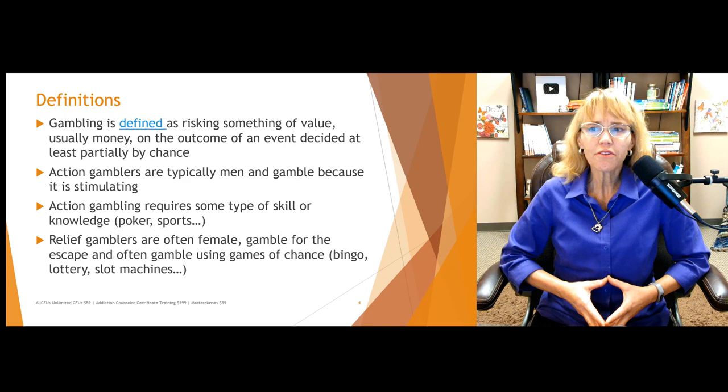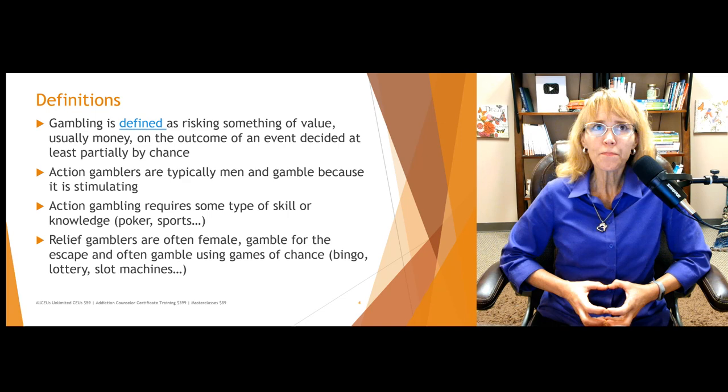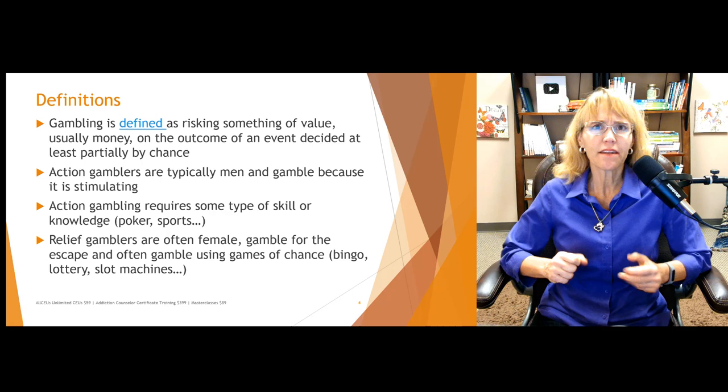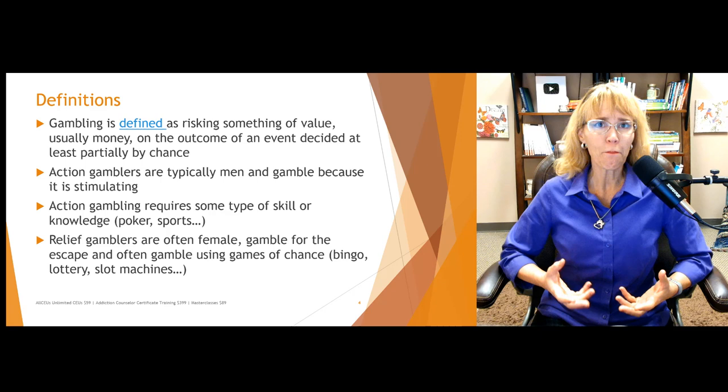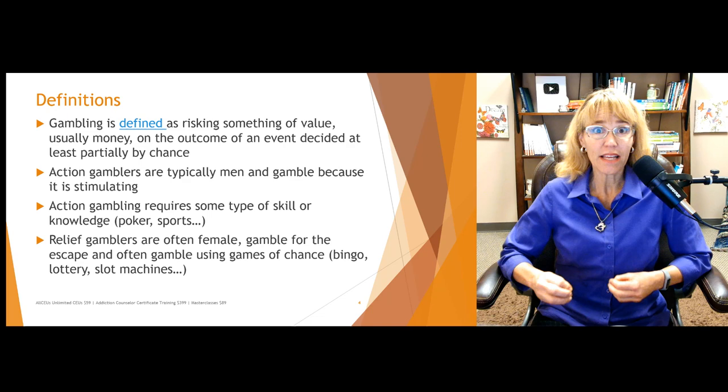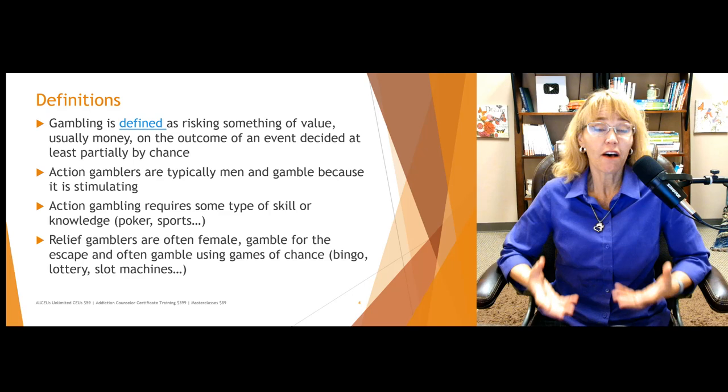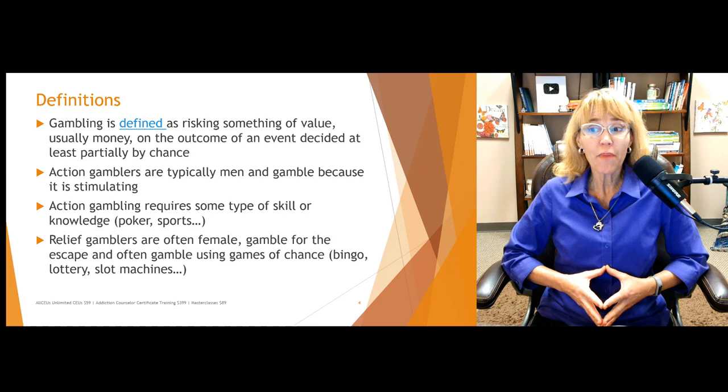Gambling is defined as risking something of value — not necessarily money, but usually money — on the outcome of an event that is decided at least partially by chance. Some gambling is skill-based, such as poker or blackjack, which you can learn and become better at. Then there is chance-based betting, which includes slot machines, games of pure chance, and the lottery.